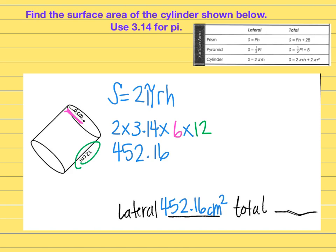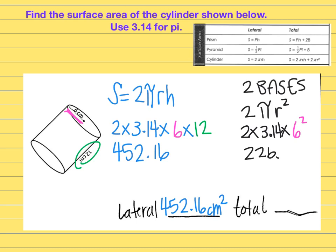Then I want to add in those two bases. The bases are circles. And when you look over here on your chart, the rest of laterals says 2πr². 2 times 3.14 times this particular cylinder had a radius of 6 and it's going to be 2πr squared. Type that all in your calculator and you should get 226.08.